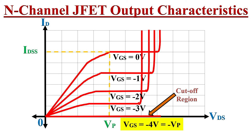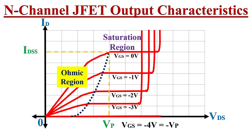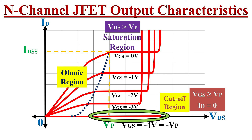When VGS equals minus VP, the device is turned off. The JFET can be operated in three different regions. First, the ohmic region — here JFET works as a resistor. As VGS is reduced from minus 1 to minus 2 to minus 3 volts, the current flow curves decrease, meaning channel resistance is increasing. By varying VGS, JFET can be used as a variable resistor. Second, the saturation region — whenever VDS is more than pinch-off voltage VP, drain current remains almost constant. Third, the cutoff region — whenever VGS is greater than or equal to VP, drain current ID is approximately zero and the device is turned off.